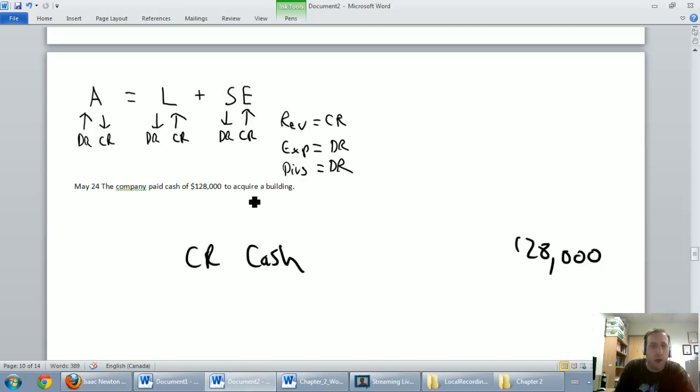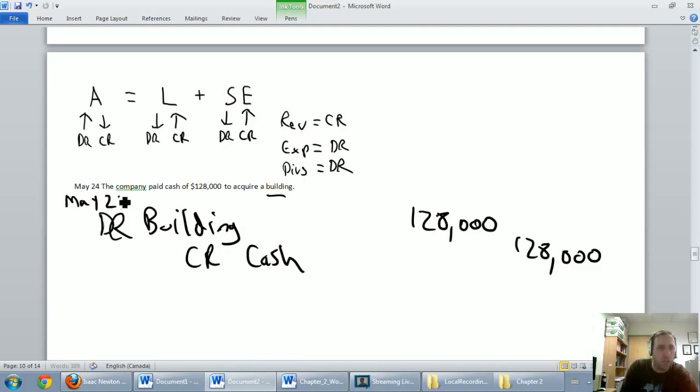Debit. Well, what did we buy? We bought a building. A building is an asset. It's an asset that's going up now. We have more buildings today than we had yesterday. Let's debit building for $128,000. It's May the 24th. The description would be purchased a building for cash. Let's carry on.